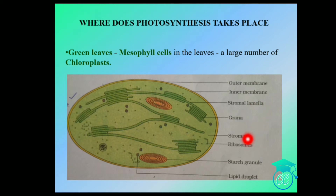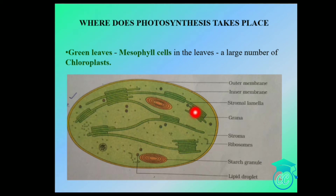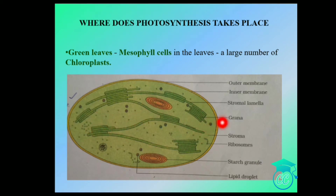In the chloroplast, the fluid inner membranous space is called the stroma. Within the stroma, a number of flattened membranes are called thylakoids. The thylakoids are arranged in piles like coins and are called grana. There is also a flattened membranous tubular structure called the stroma lamella, connecting the thylakoids of different grana.